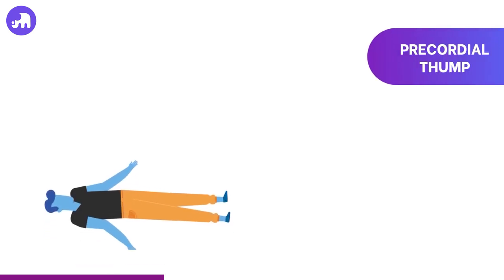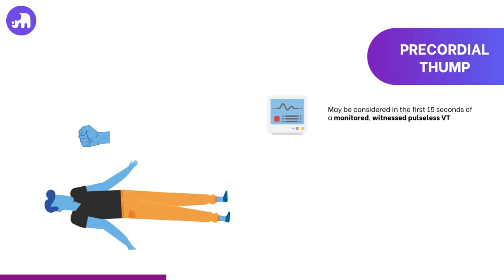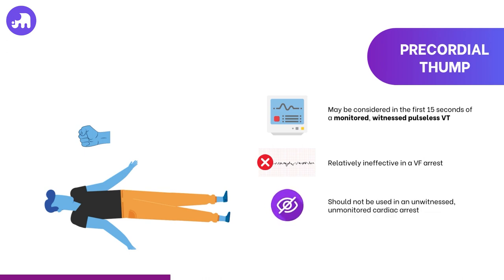Based on the 2021 ANZCOR guidelines, a precordial thump is described as a single, sharp blow delivered by a rescuer's fist to a victim's mid-sternum. This technique may be considered for patients with monitored pulseless ventricular tachycardia when a defibrillator isn't immediately available. However, its efficacy is limited for VF, and thus it's not recommended for this rhythm. The precordial thump should be avoided in unwitnessed cardiac arrests.